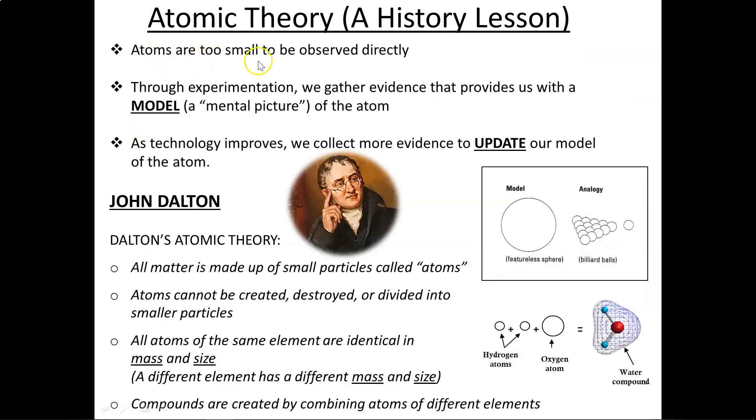We all know that atoms are very small, too small to be seen. So how do we know so much about something that we've never actually seen with our own eyes? Through experimentation, we gather evidence that provides us with a model—a kind of mental picture of what we believe the atom looks like. As technology improves, we collect more evidence and update our model to give us a better picture of what the atom is like.